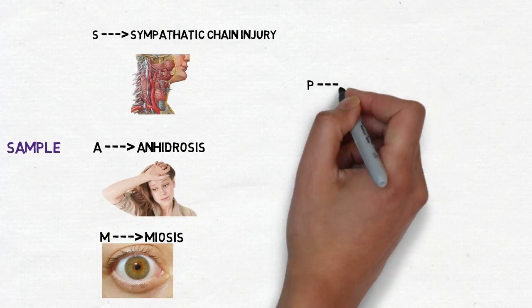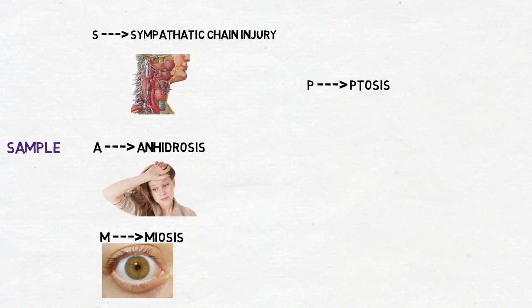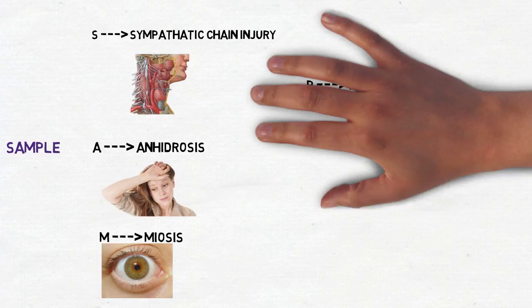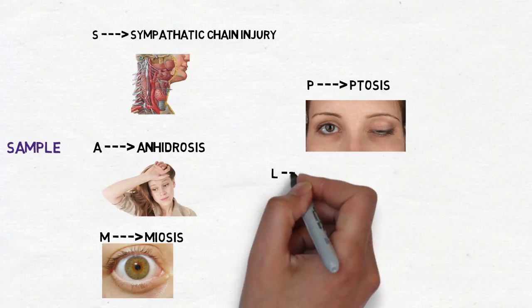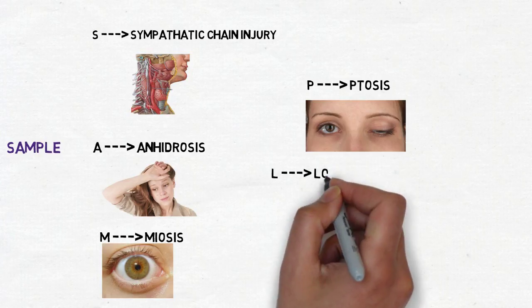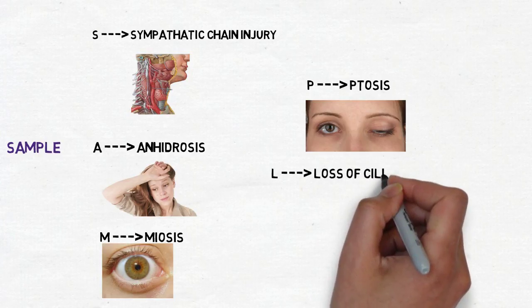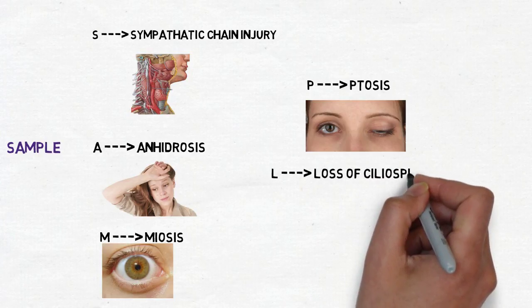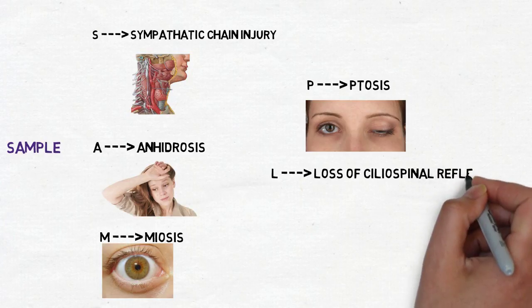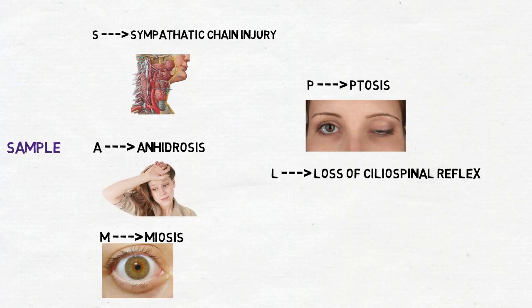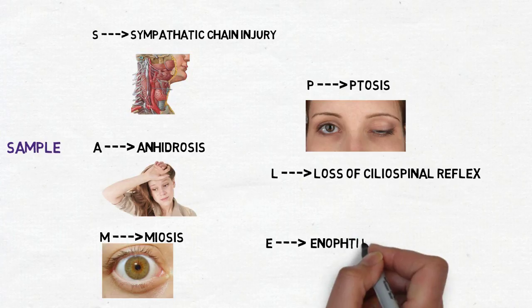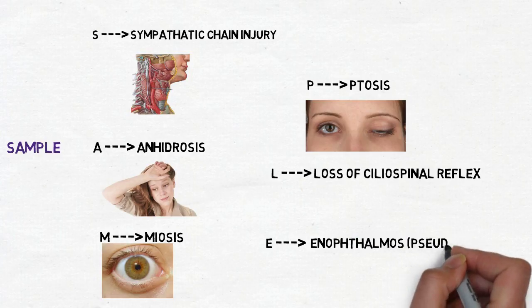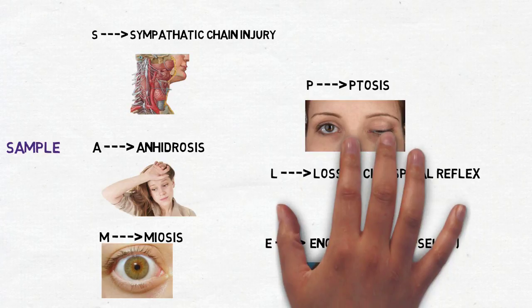P stands for ptosis, or drop of the eyelid. L stands for loss of ciliospinal reflex, which involves mydriasis. E stands for enophthalmos, or pseudo-enophthalmos in the case of Horner's syndrome.